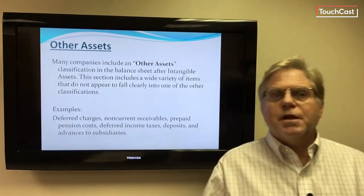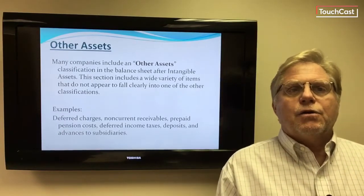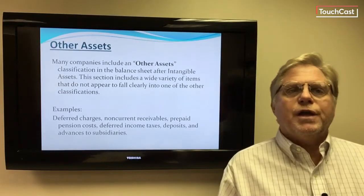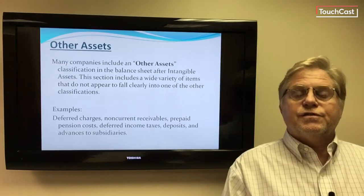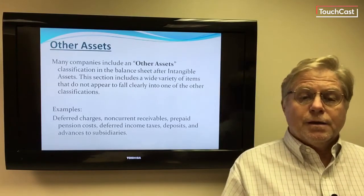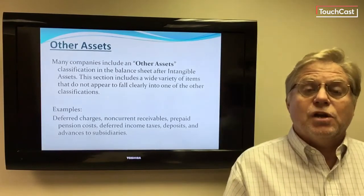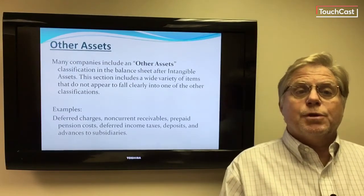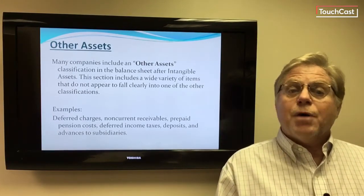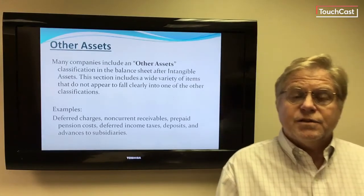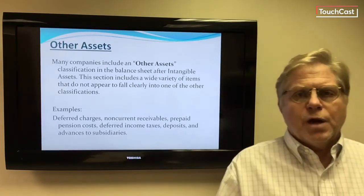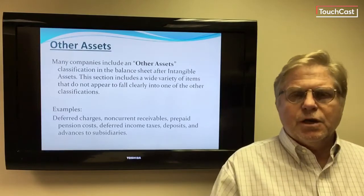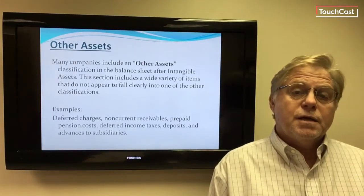Other assets is a catch-all category that appears after intangible assets and includes a wide variety of items that don't clearly fall into the other classifications. Examples include deferred charges, prepaid income taxes of a long-term nature, non-current receivables, prepaid pension costs, deposits, long-term deposits, and advances to subsidiaries. These are unusual items we won't deal with very much, but it's worth being aware of the kinds of things you might find there.